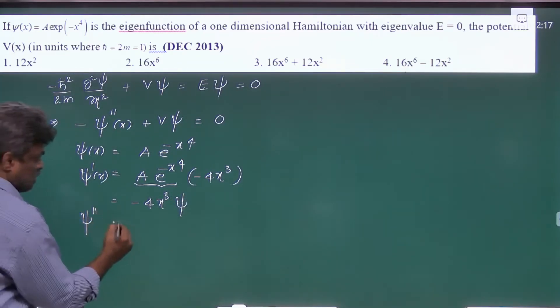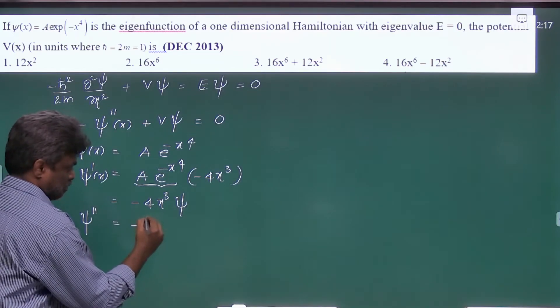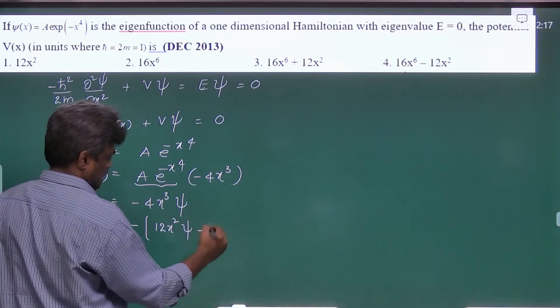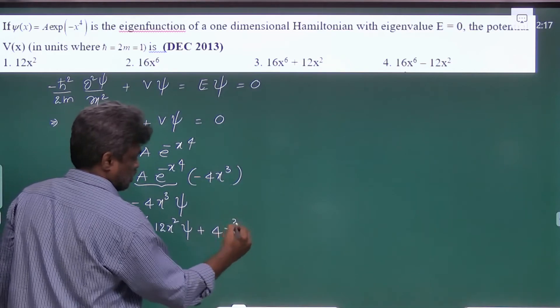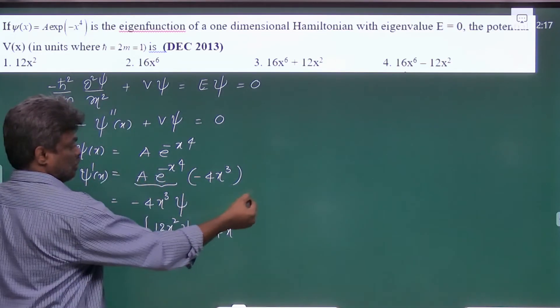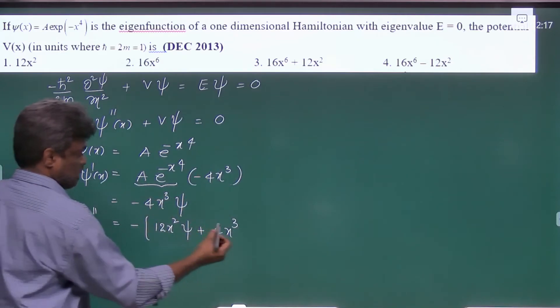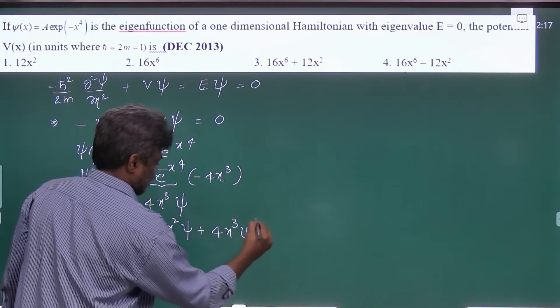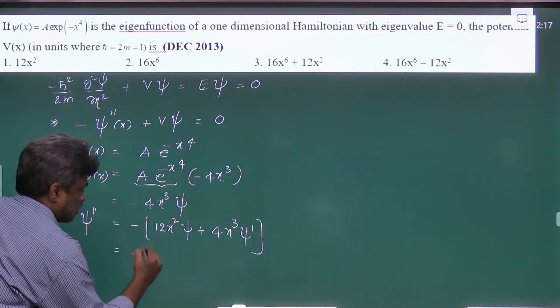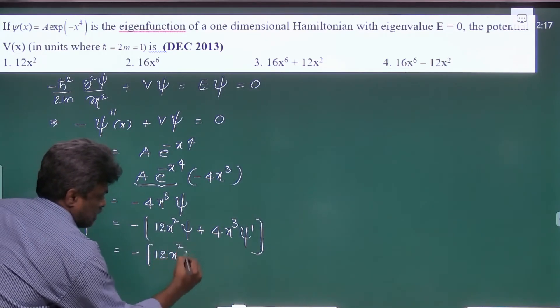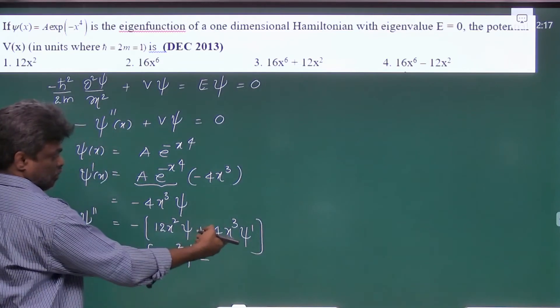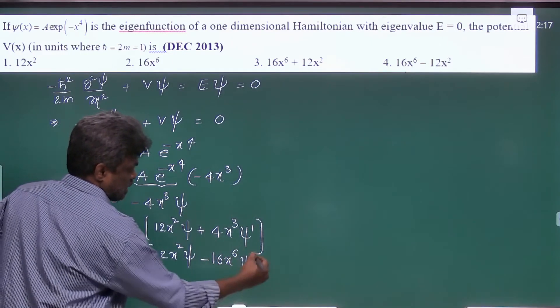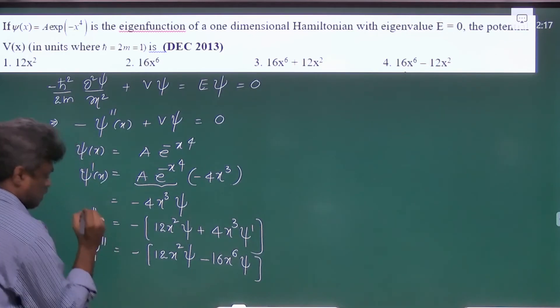And again, one more time if you differentiate, this is -12x²ψ plus 4x³ψ'. Again, ψ' you know what is ψ' - it's -4x³ψ. Now substitute that ψ': -12x²ψ - 4x³(-4x³ψ) = -12x²ψ + 16x⁶ψ. This is your second derivative.